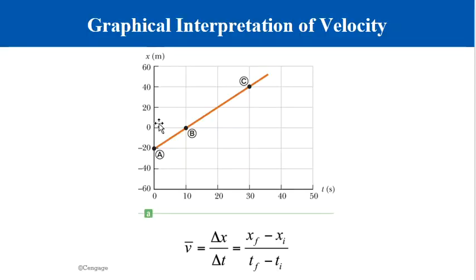We are now on the section on motion at constant acceleration. By this time you should understand the difference between velocity and speed, and be able to analyze the relationship between position versus time and velocity versus time. To quickly review: if an object is moving and increasing its displacement at a constant rate, the object will have a constant velocity, shown as a straight line on the graph.